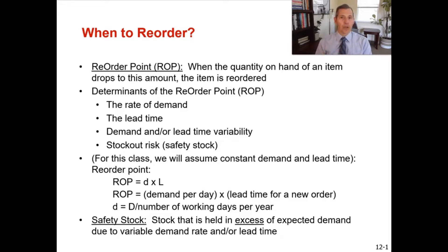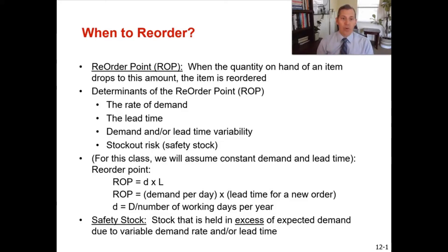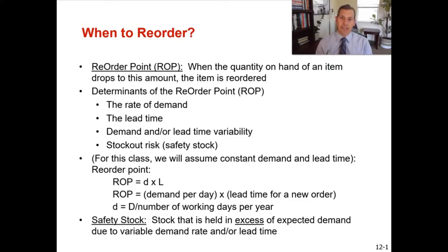I'm going to talk you through how safety stock would incorporate into the reorder point, but for the sake of this course, I'm going to teach you the reorder point calculation without adding the safety stock buffer. A reorder point is when the quantity on hand of an item drops to a specific amount, then that item is reordered. You can do the reorder point calculation whether something is a make item or a buy item — buying from a vendor or making it internally is irrelevant; the calculation is exactly the same.